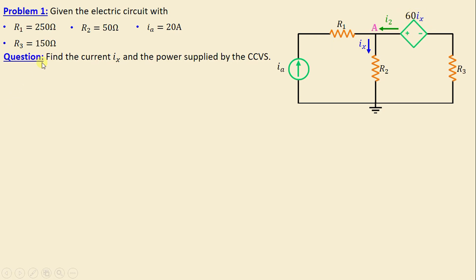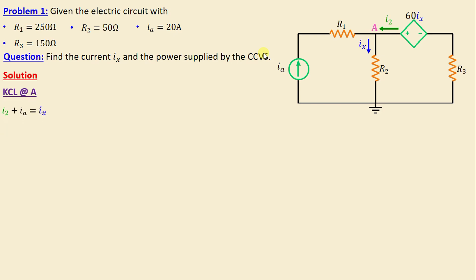The question is to find the current ix, which is the current through resistor R2, and the power supplied by the current controlled voltage source. To solve this problem, we are going to apply Kirchhoff's laws. Let's start by applying Kirchhoff's current law at node A. We can write: i2 plus ia is equal to ix.